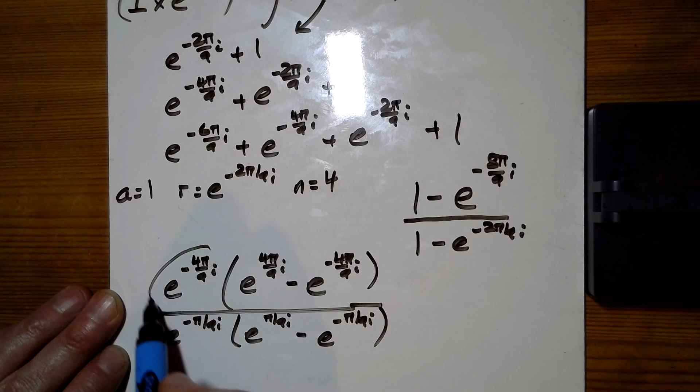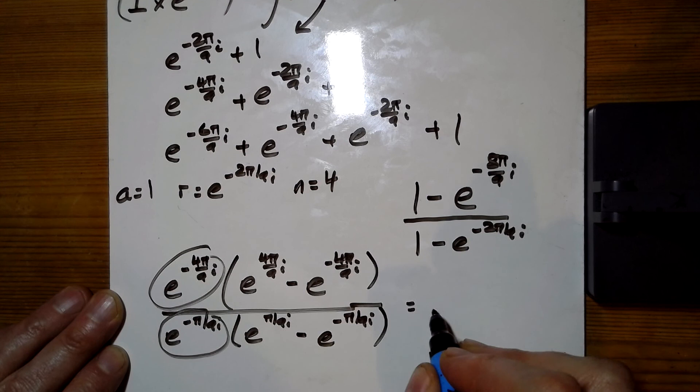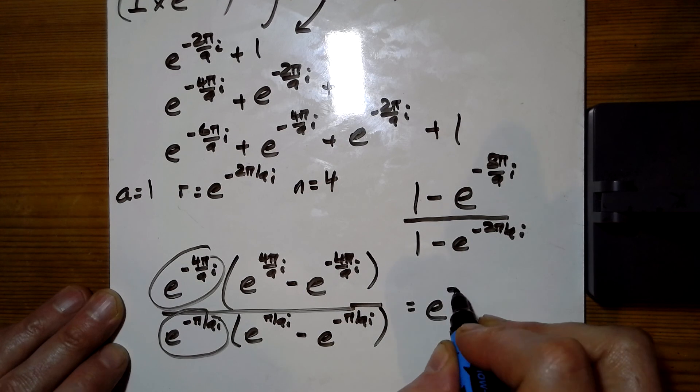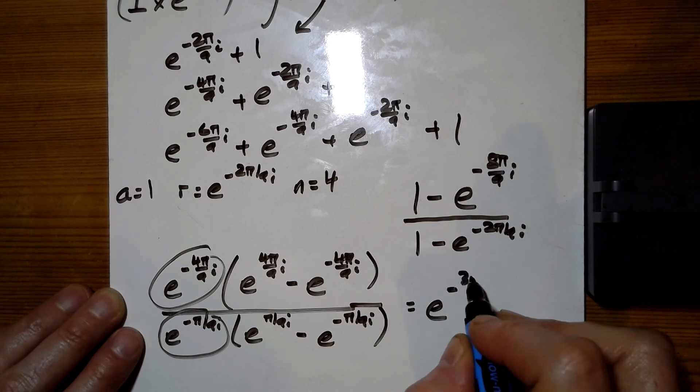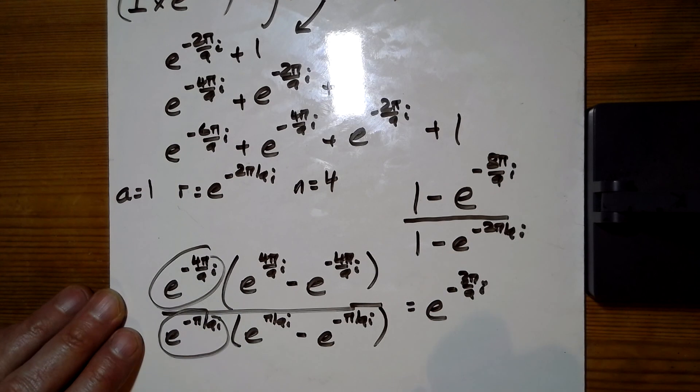Now what does that give us? First of all, let's look at these e bits here. So that is minus 4 ninths minus minus a ninth. So that is e to the minus 3pi over 9. So there's our rotational bit.